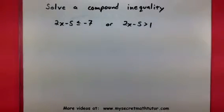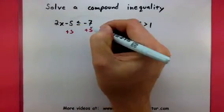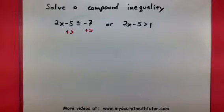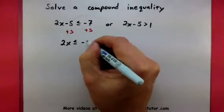Alright, so let's get started. Over on the one on the left, I want to isolate that X, get it all by itself. So I'm going to start by adding 5. This will give me 2X is less than or equal to negative 2.